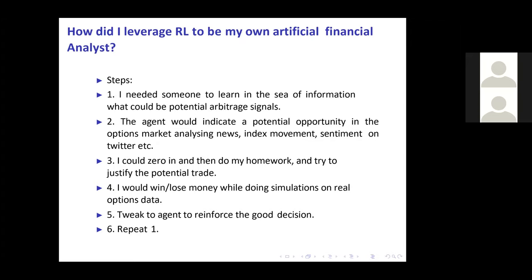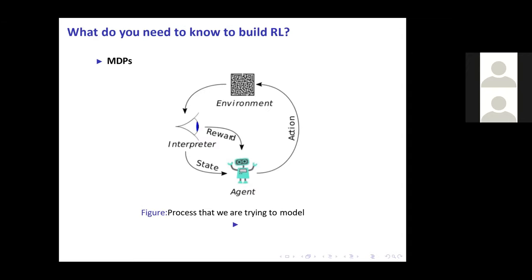You let the agent parse the information, he gives you signals, you trade on them, and then depending on whether it was good or bad he can learn — just like a child learning what was a good decision or not. Now we can jump into the mathematics part.